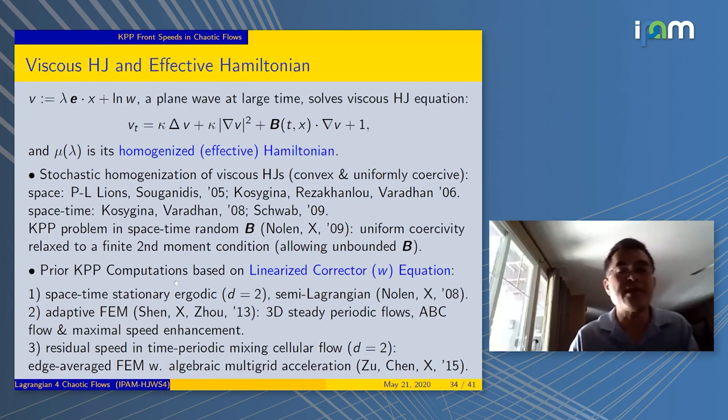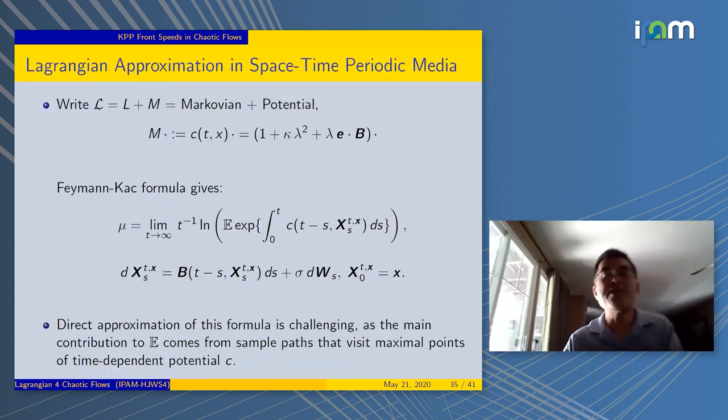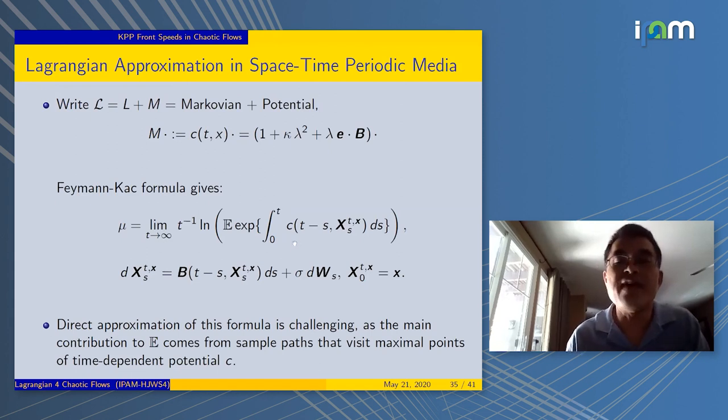Previous computational efforts were using the linearized corrector equation, one way or the other, by finite elements or semi-Lagrangian, which I list here. But today, we're going to do full Lagrangian. We can write the Feynman-Kac formula for the solution. The only problem is this formula is very difficult to directly simulate, because you really trace trajectories that try to maximize this quantity, and that is a rare event, perhaps.